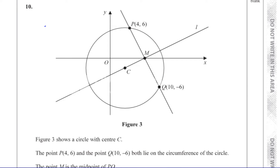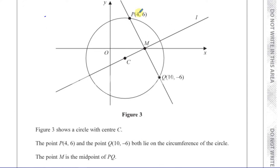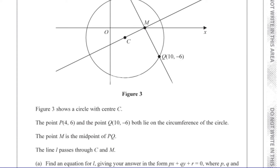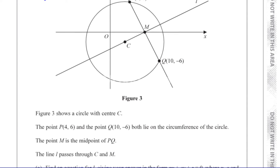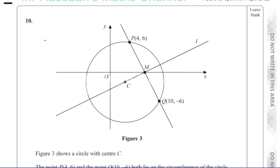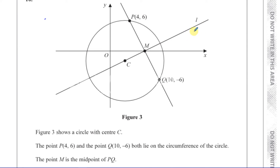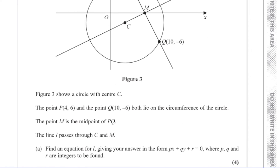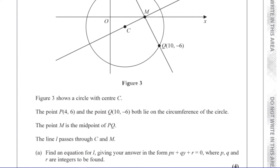The point M is the midpoint of PQ, and the line L passes through C and M — that is, through the centre of the circle and the midpoint of PQ. We need to find an equation for L in the form PX + QY + R = 0, where P, Q and R are integers to be found.